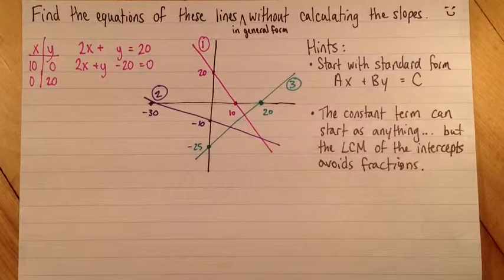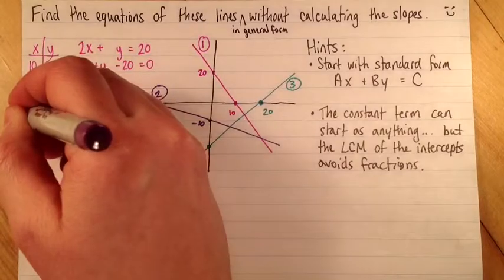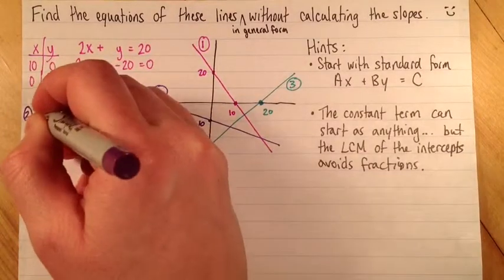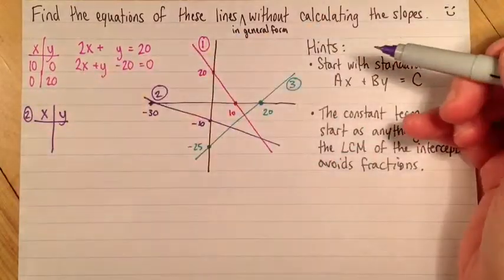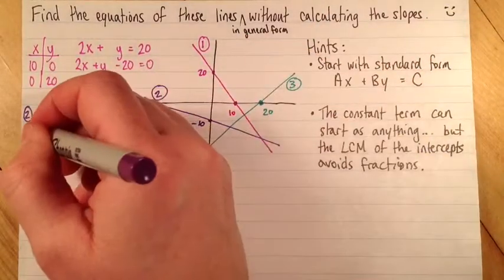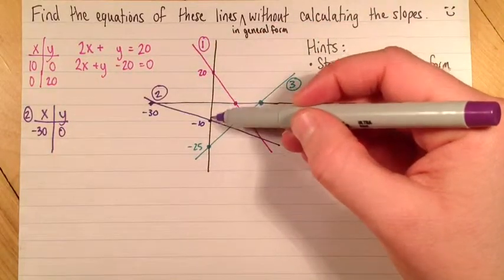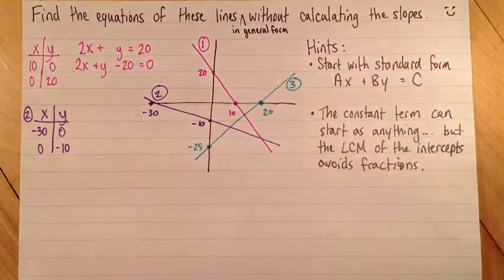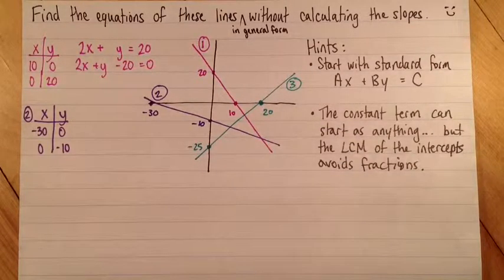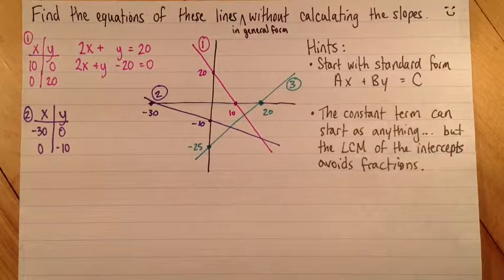Let's do some more. The purple equation is next, that's number 2. I'll make a little table again. My first point is negative 30, 0. And my second point is 0, negative 10.